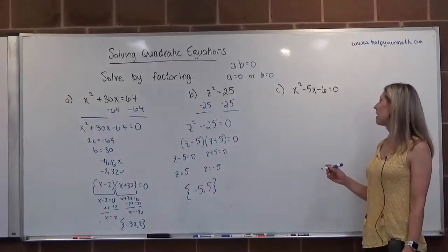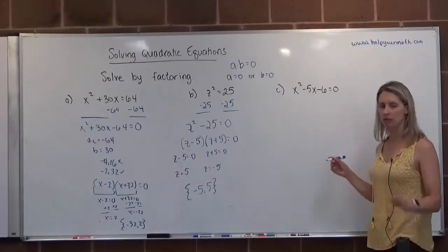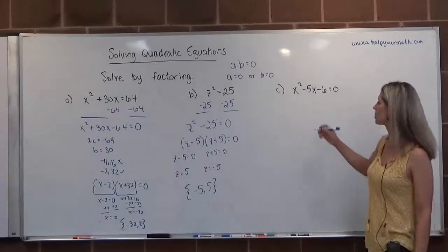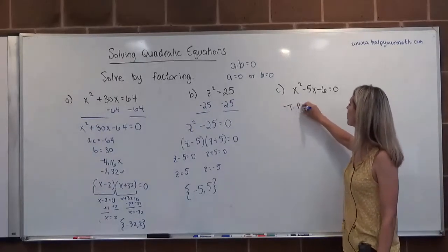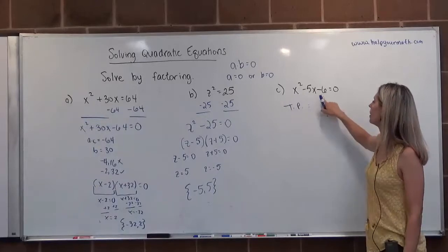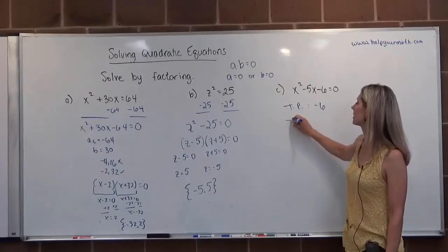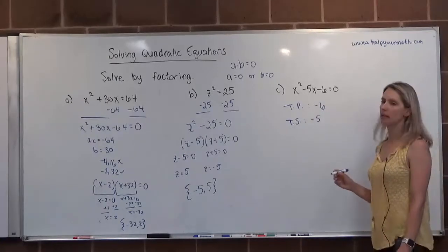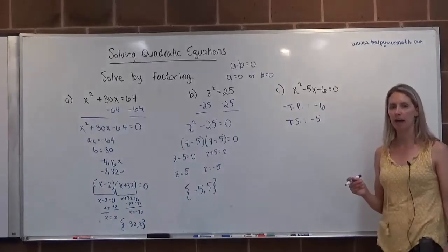In letter C, we have x squared minus 5x minus 6. It's already equal to zero, so that's great. GCF of these three terms is 1, so we can just go right to target product, target sum. The target product would be 1 times negative 6, which is negative 6. The target sum would be negative 5. Two numbers that multiply to negative 6 and add up to negative 5.